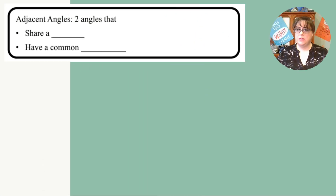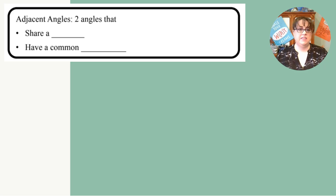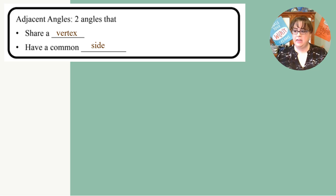We are going to start with adjacent angles. Adjacent angles share a vertex and have a common side. Let's look at an example.